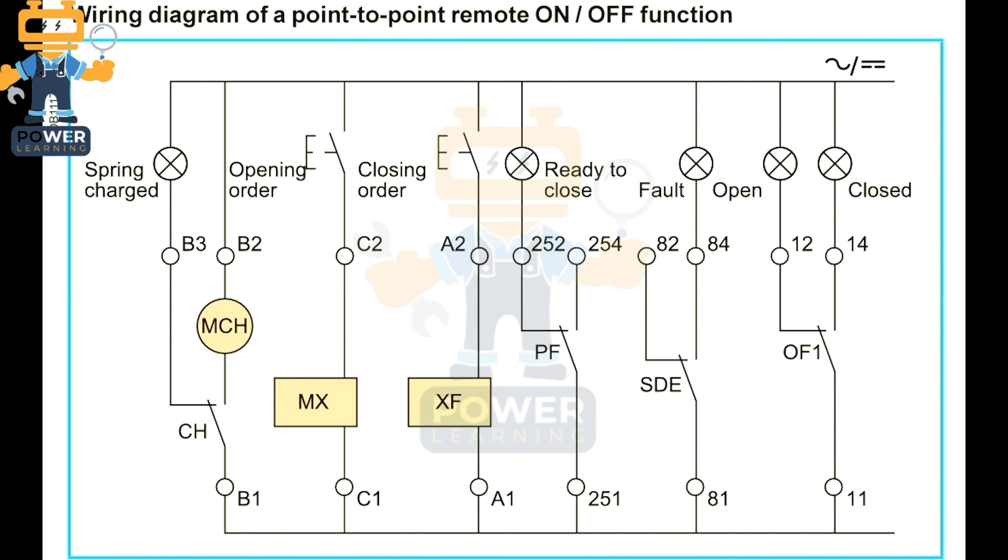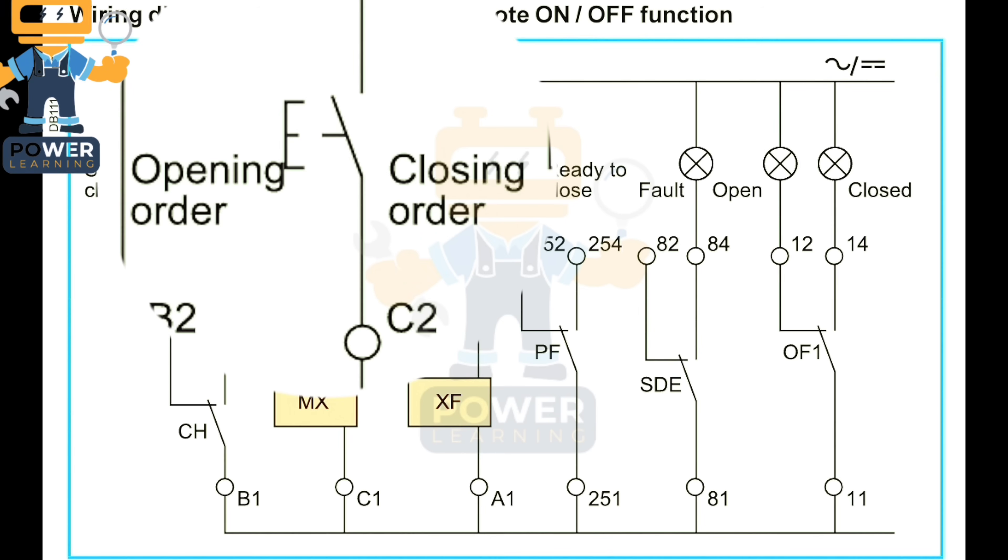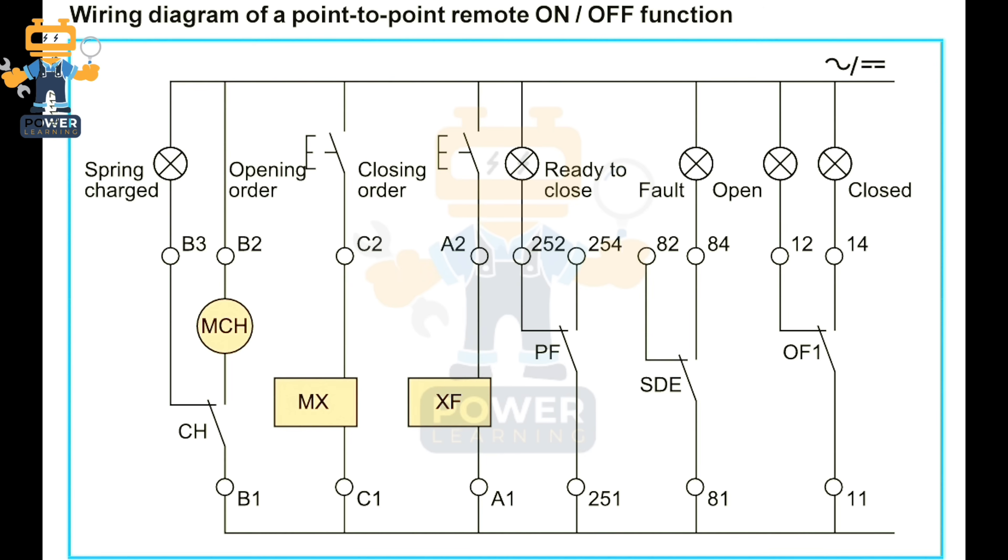After that we will see opening order and closing order. What is meant by opening and closing order? Opening order means to open the breaker, to turn off the breaker, and closing means to turn on the breaker and to close the breaker. It means we need two coils to turn on the breaker and to turn off the breaker. For turning on we need closing order. For turning off we need opening order. The opening order coil is called MX and the closing order coil is called XF.